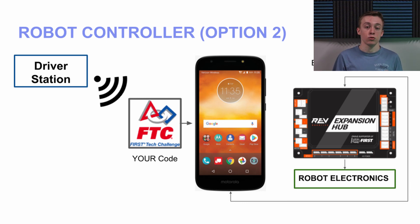The Control Hub really just combines the phone and the first expansion hub together, and it's a lot more reliable because there are fewer connections and fewer things that can fail. Also, REV has direct access to the Control Hub's operating system, so if a bug is found or issues arise, REV can roll out a fix — whereas with so many different phones being allowed, there are a lot more issues that could arise that REV can't really do anything about.